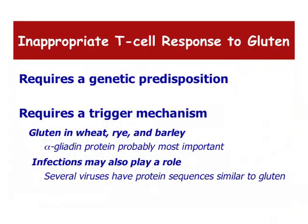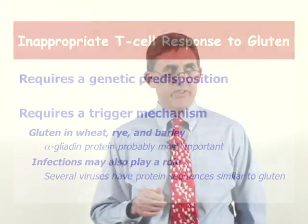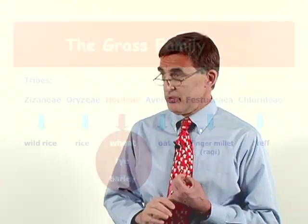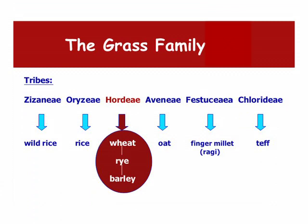Celiac disease requires a genetic predisposition. Most people eat rye, barley, and wheat with no difficulty, but those with a genetic predisposition will develop celiac disease. The trigger is thought to be the alpha-gliadin protein found in gluten, which is again found in wheat, rye, and barley. Other members of the grass family — such as oats, rice, teff, and millet — belong to separate tribes within that family and are all safe foods to eat.